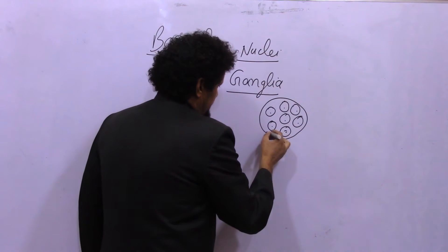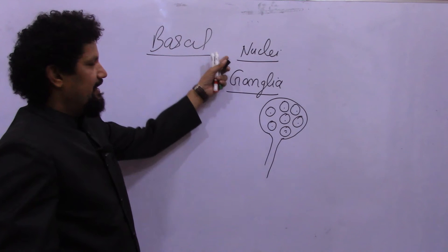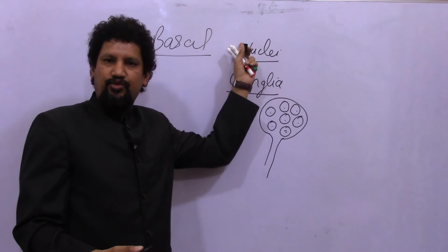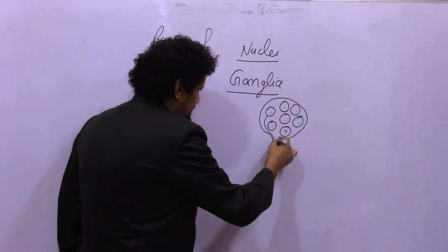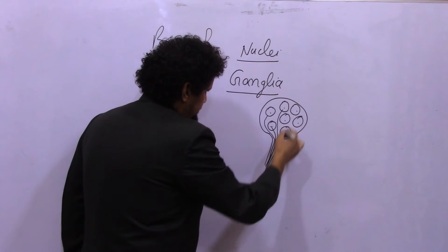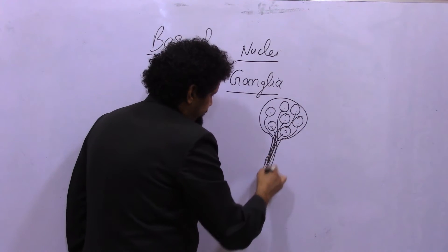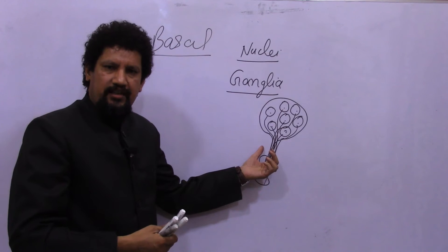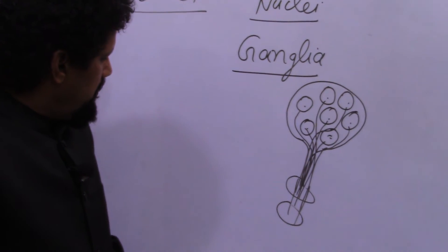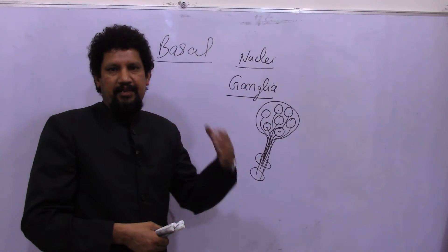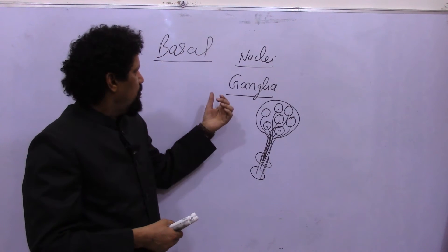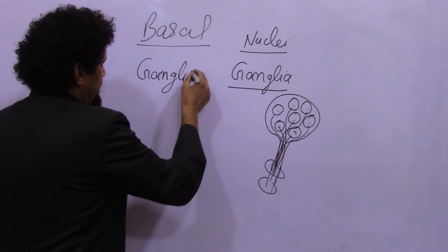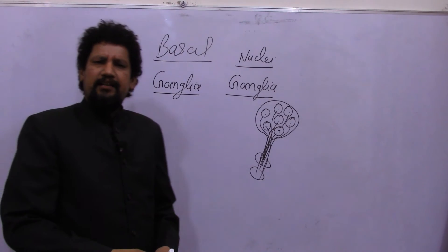To summarize: a collection of neurons inside the CNS is a nucleus; outside the CNS it is a ganglion. The long tails of these neurons — the axons — form tracts, commissures, or projection fibers inside the CNS, and peripheral nerves (cranial or spinal nerves) outside the CNS.